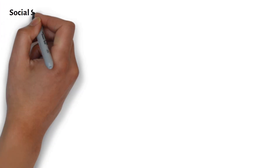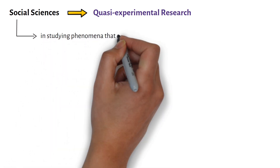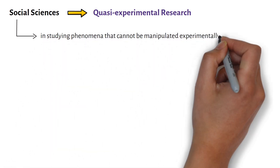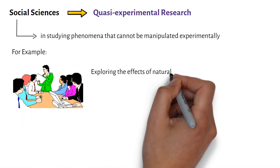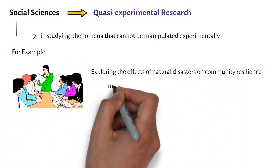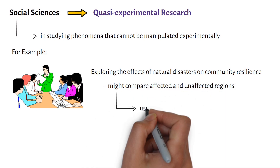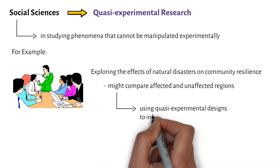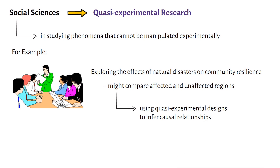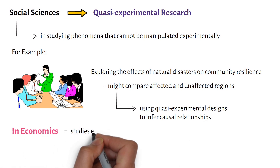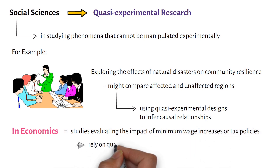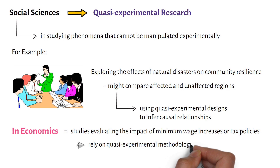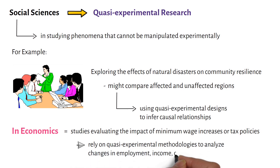Social sciences also benefit from quasi-experimental research, particularly in studying phenomena that cannot be manipulated experimentally. For example, researchers exploring the effects of natural disasters on community resilience might compare affected and unaffected regions using quasi-experimental designs to infer causal relationships. In economics, studies evaluating the impact of minimum wage increases or tax policies often rely on quasi-experimental methodologies to analyze changes in employment, income, or consumer behavior.